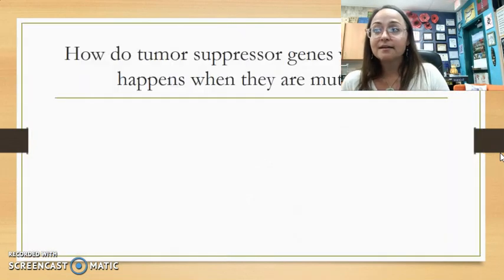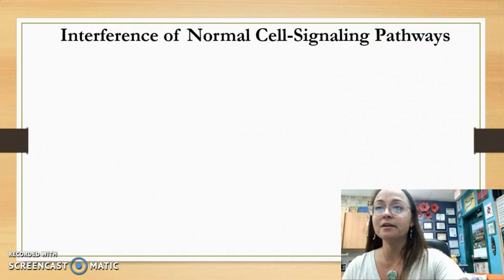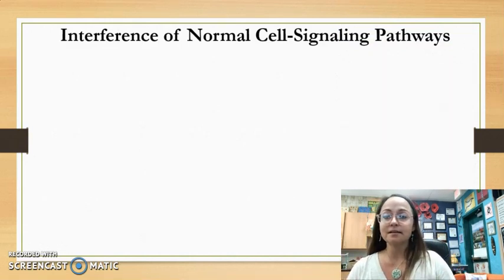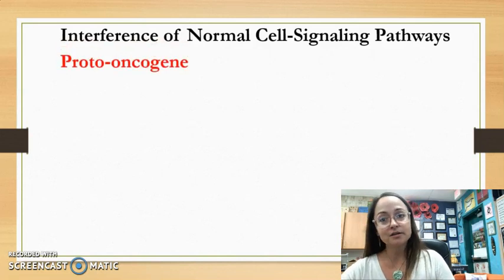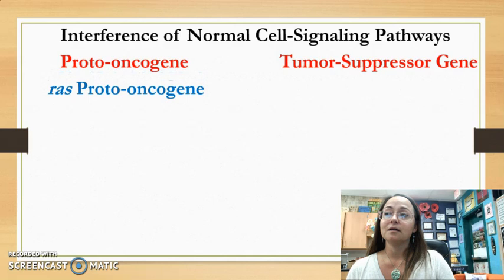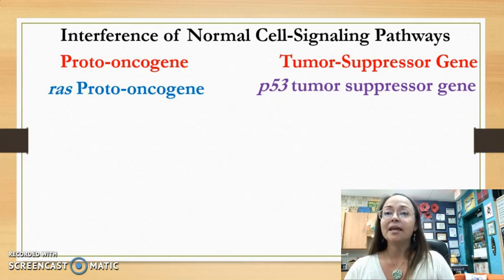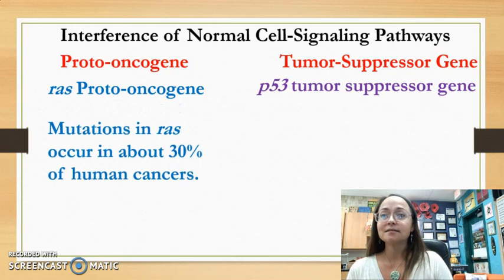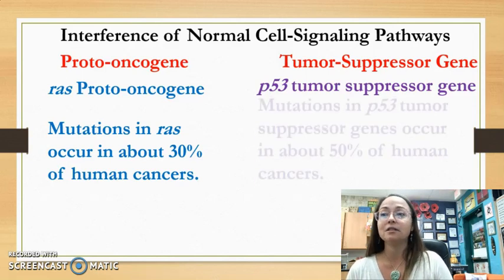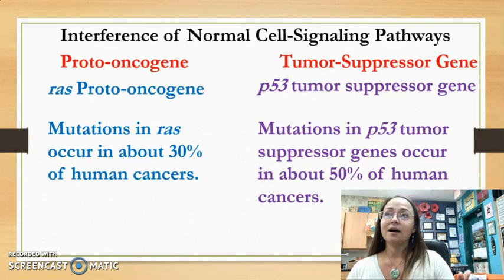As a summary: interference with normal cell signaling pathways can occur through proto-oncogenes becoming oncogenes or through tumor suppressor gene failure. A common oncogene example is the Ras protein, and a commonly studied tumor suppressor gene is P53. Mutations in the Ras gene occur in about 30% of human cancers, while mutations in P53 occur in about 50% of human cancers, making these two critically important proteins in preventing abnormal cell division.